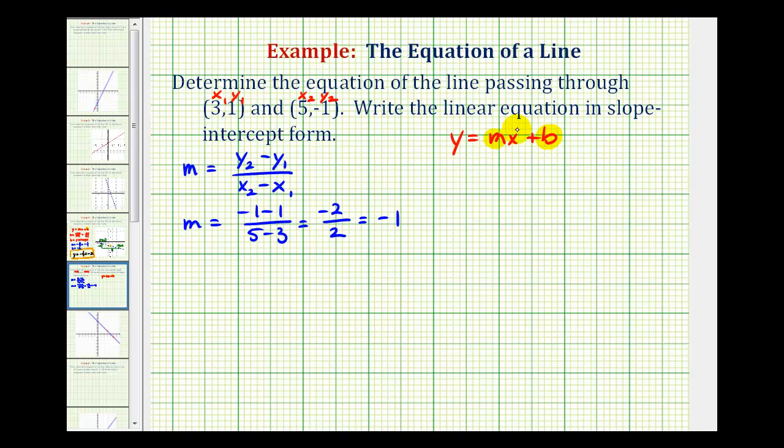So, now that we know the slope, we know that y must equal negative one x plus b. And, we'll simplify negative one x later. Now, let's determine the y-intercept.